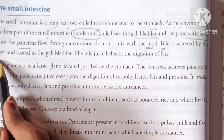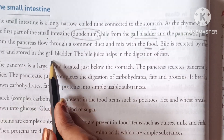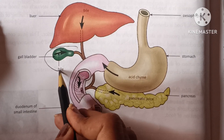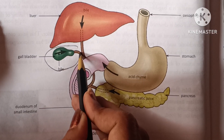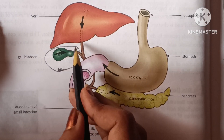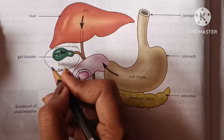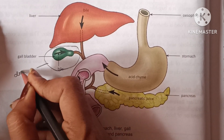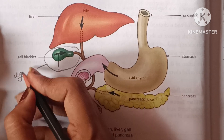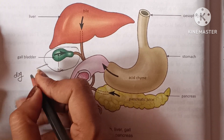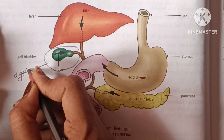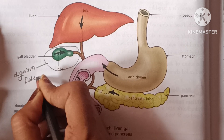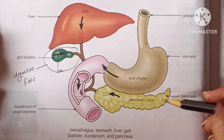Bile is secreted from the gallbladder and pancreatic juice is secreted by the pancreas, and both are mixed with the food in the duodenum. Bile juice is secreted by the liver and stored in the gallbladder. This bile juice helps in the digestion of fats.